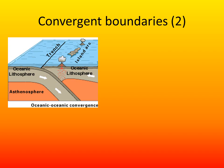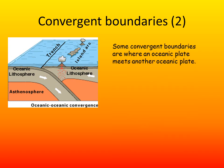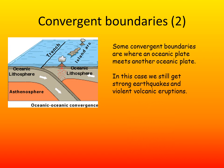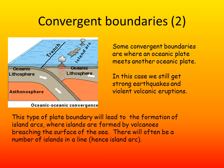The second type of convergent boundary happens where you have oceanic crust meeting oceanic crust. At these locations we still get subduction, strong earthquakes, and violent volcanic eruptions. This type of plate boundary will lead to the formation of what we call island arcs. Islands are formed by erupting volcanoes that eventually breach the surface of the sea, often leading to a number of islands in a line — hence we call it an island arc. A famous example is the Ryuku Islands, just off the coast of China in the East China Sea, lying south of Japan.